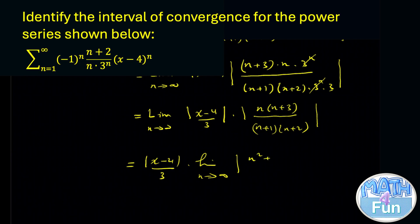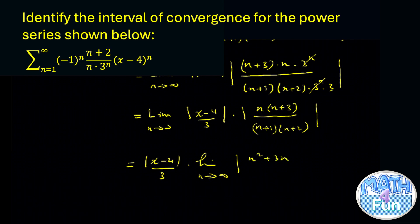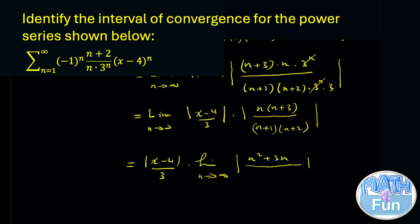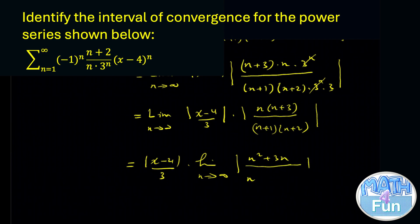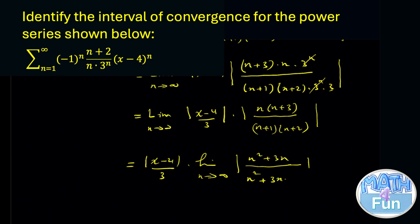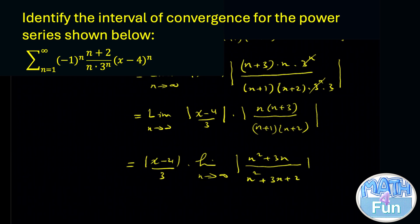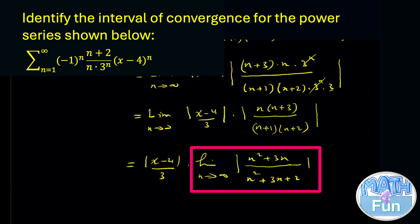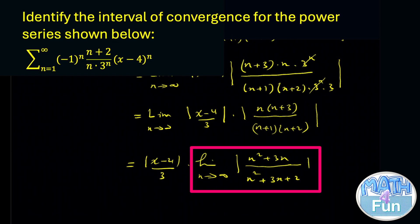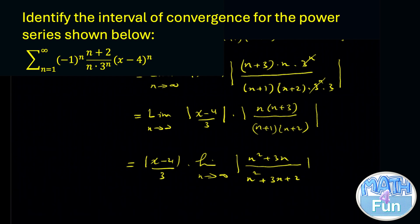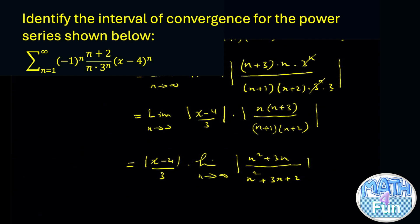Let's simplify the remaining limit: n times n plus 3 expands to n squared plus 3n, and n plus 1 times n plus 2 expands to n squared plus 3n plus 2. So we need the limit as n approaches infinity of n squared plus 3n over n squared plus 3n plus 2, which equals 1.